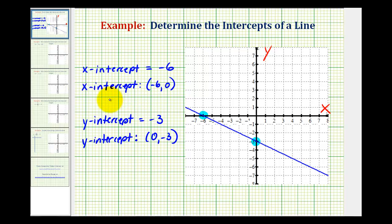Personally, I like to give the intercepts as ordered pairs, as we see here and here, because it emphasizes that the x-intercept occurs where the y-coordinate is equal to 0, and the y-intercept occurs where the x-coordinate is equal to 0.